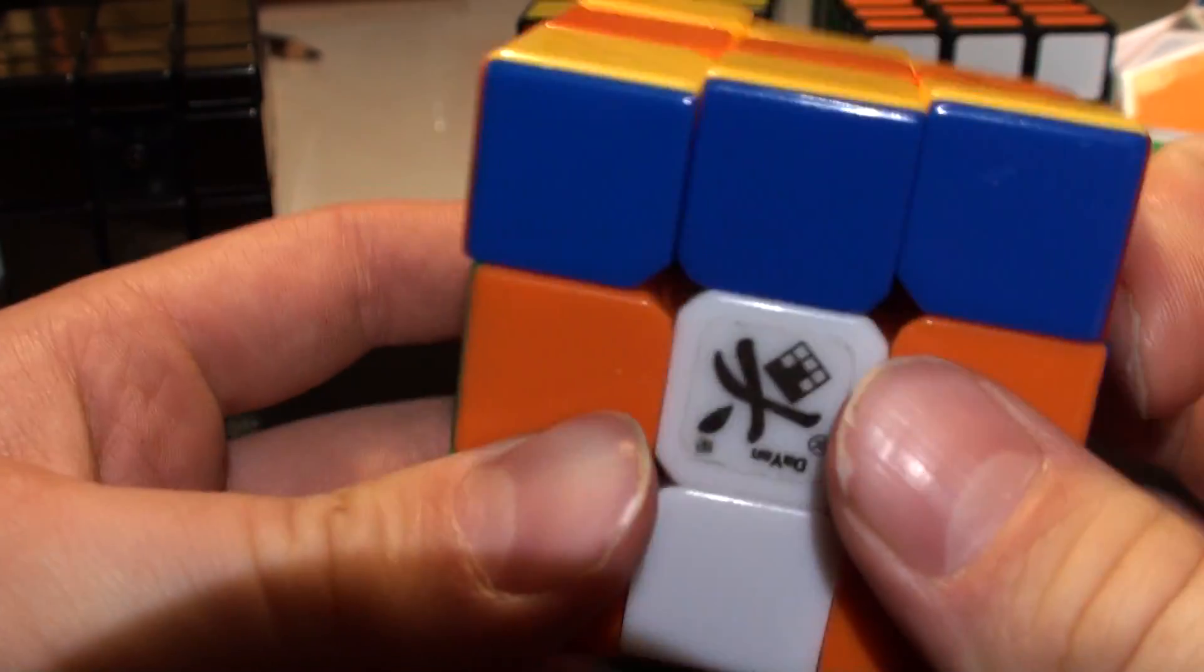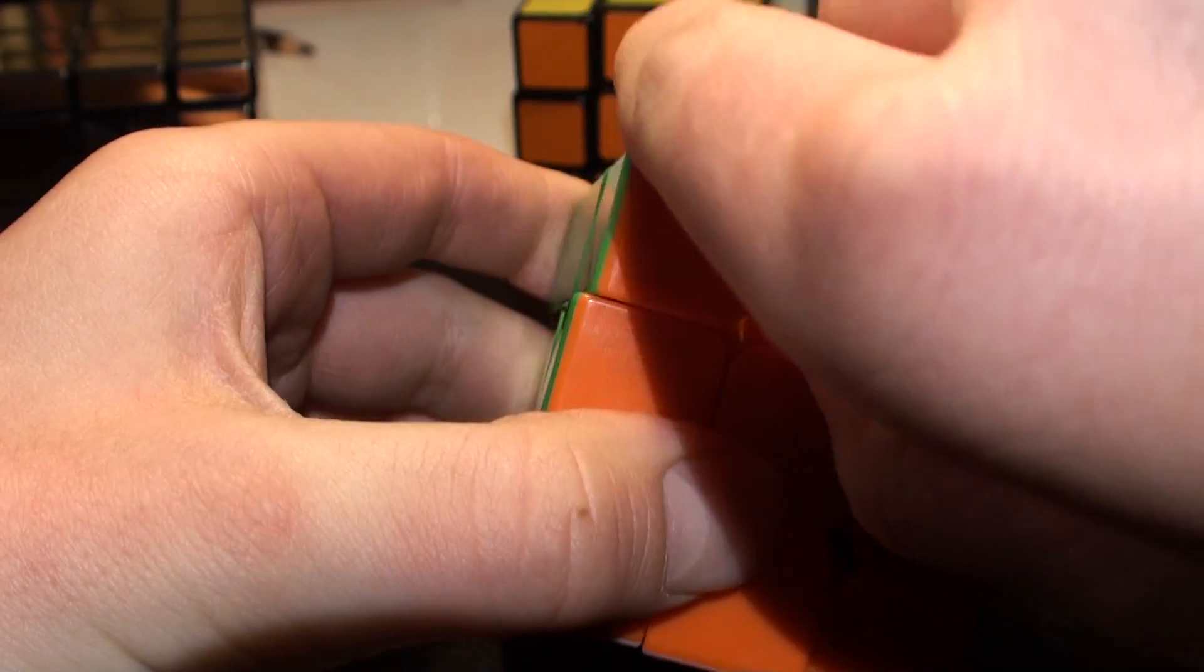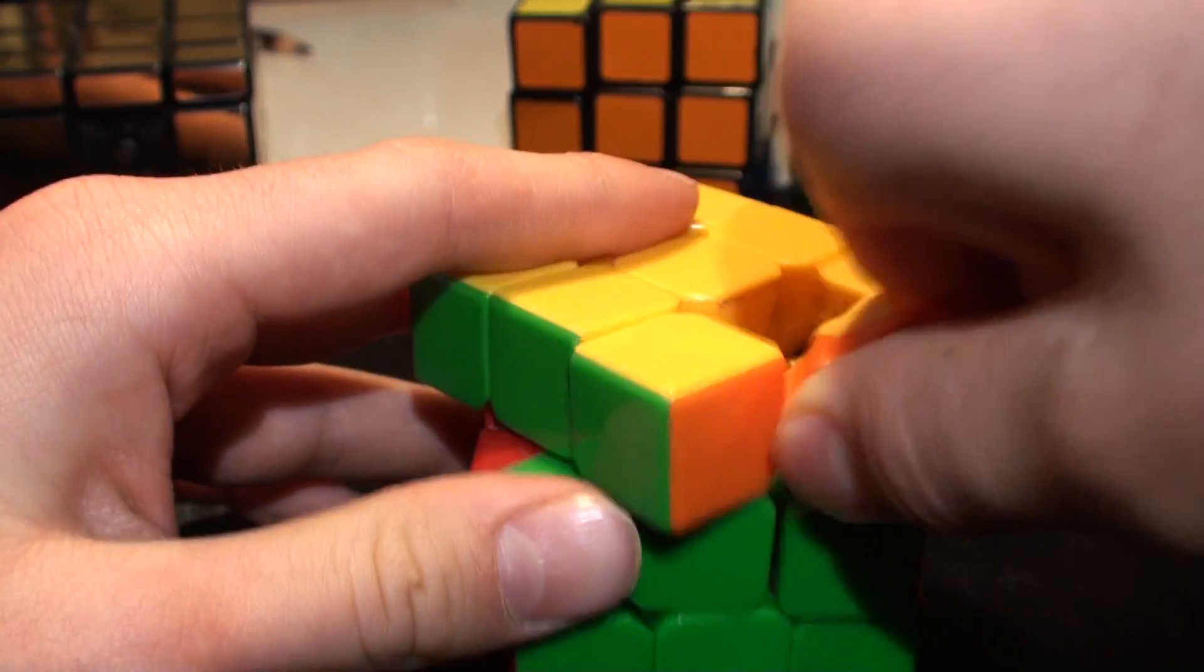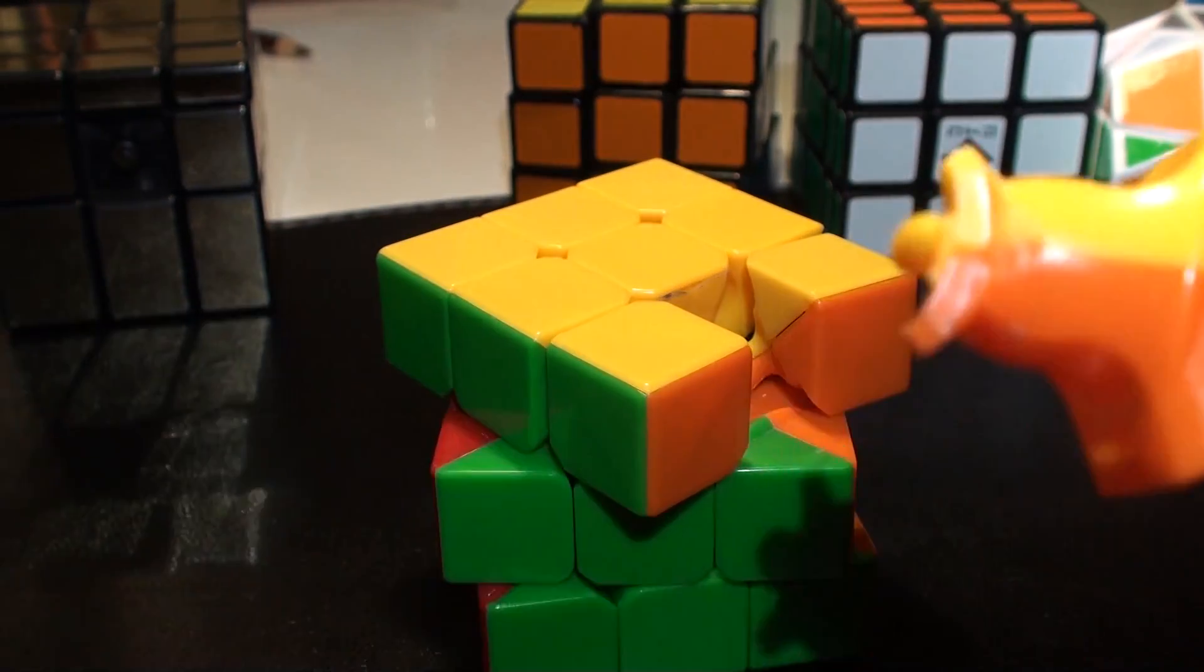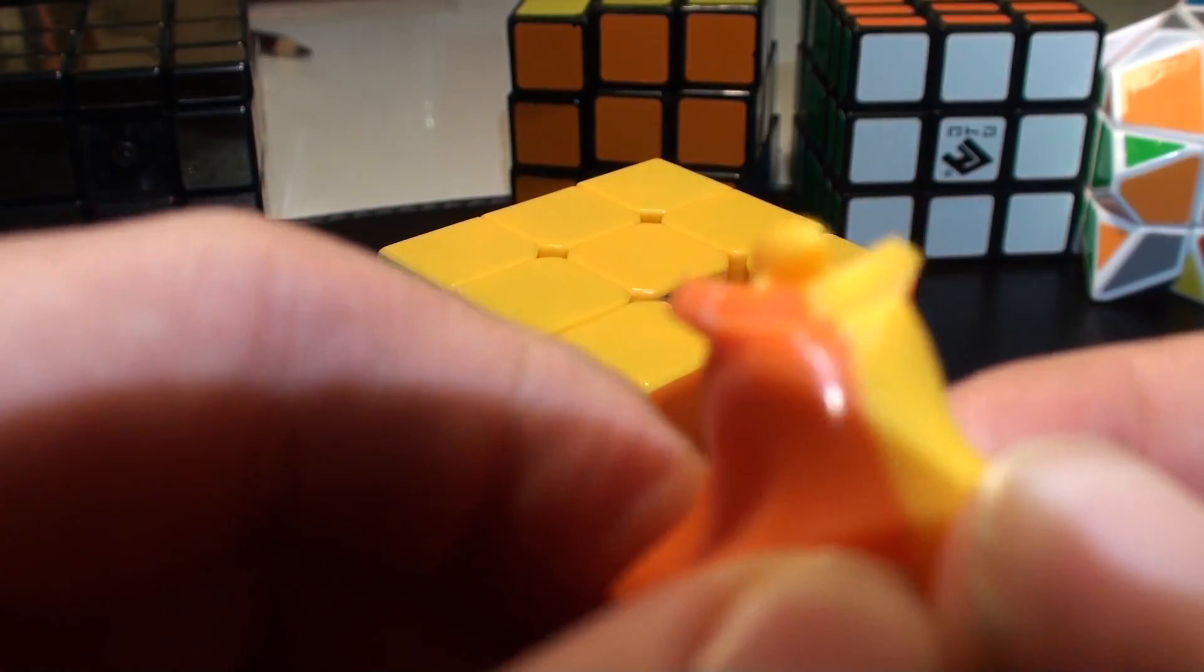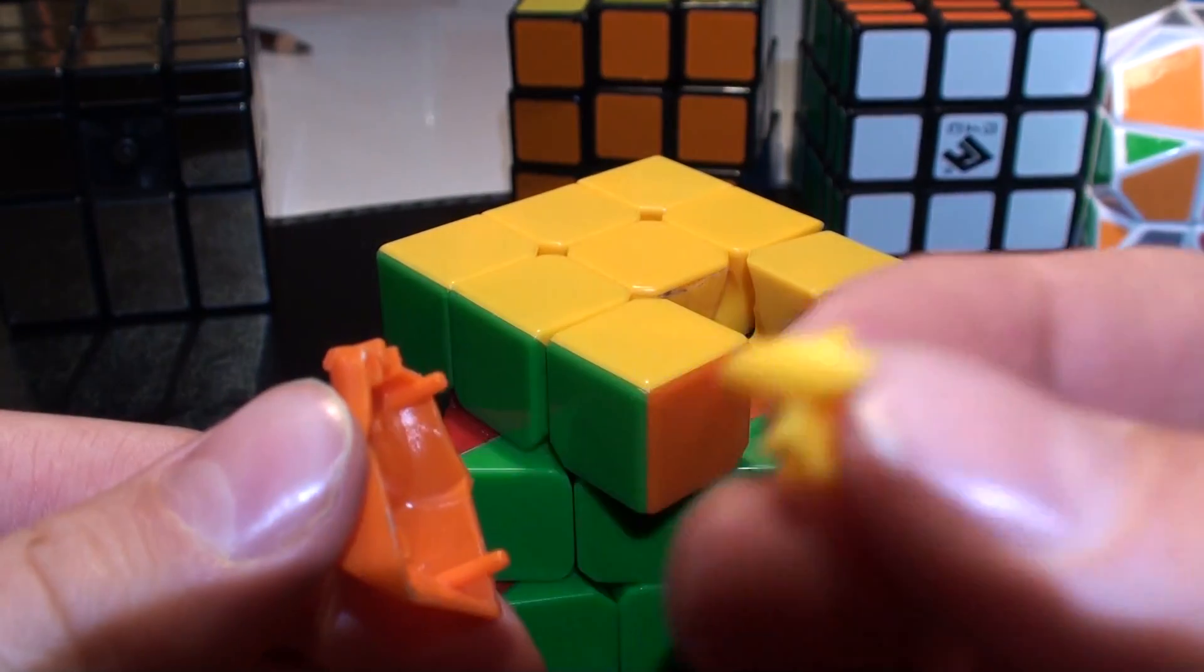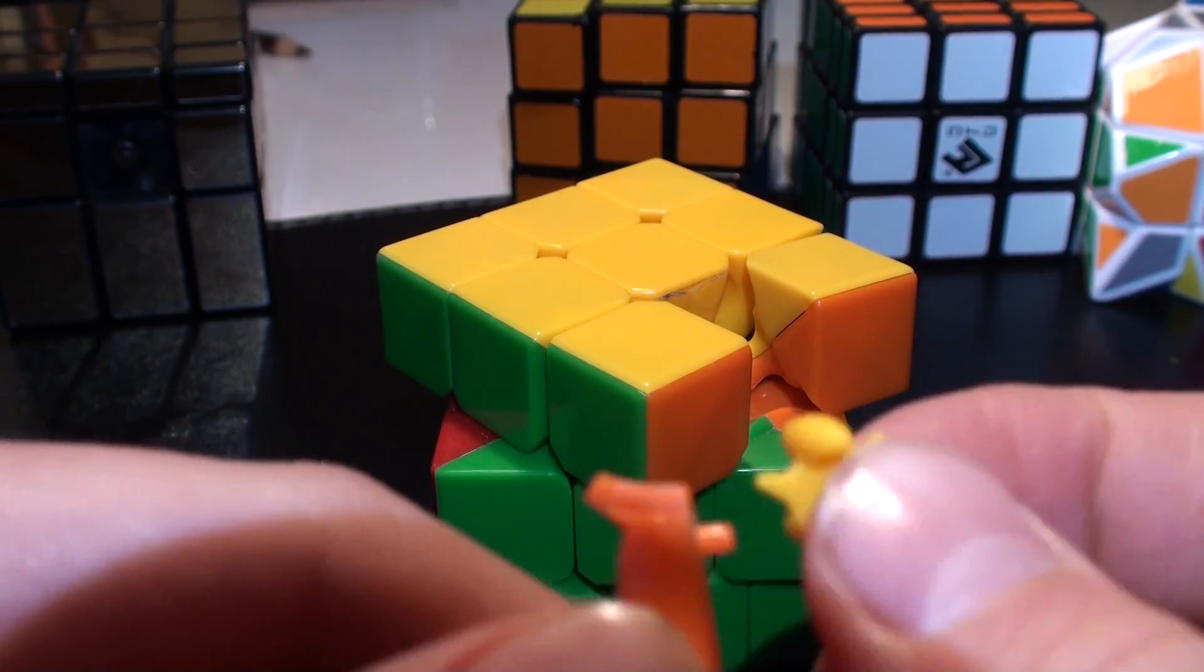Now I can show you how it looks. You can see the edge piece here. You can see the torpedo and it can go like this. Here is the torpedo which helps the cube not pop.